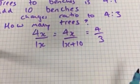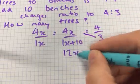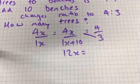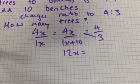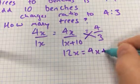You then cross multiply to get 12x. So I've multiplied the 4x by 3, and then... And then what do I do? Cross multiply to get 4x plus 40. 4x plus 40.